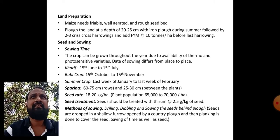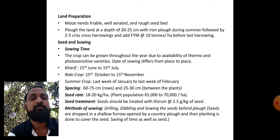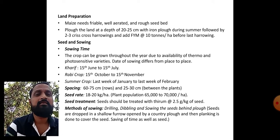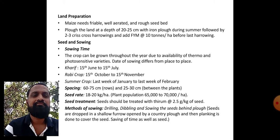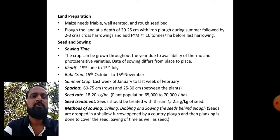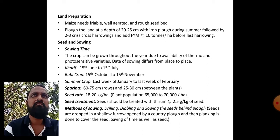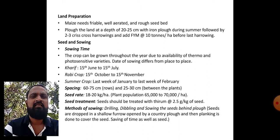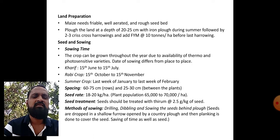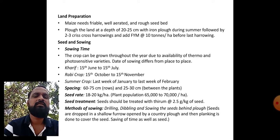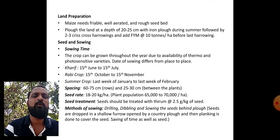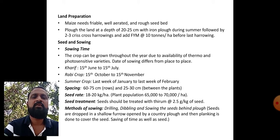Methods of sowing: drilling, dibbling, and sowing behind the plough - these three methods are generally used to sow this crop. Sowing of seed behind the plough has nowadays become most popular because it is a time-saving method. In this method, seeds are dropped in a shallow furrow opened by a country plough and then planking is done to cover the seeds.